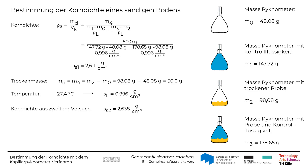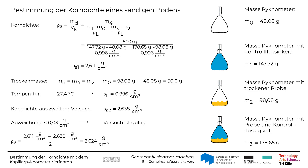In einem weiteren Versuch am gleichen Boden wird nach gleichem Vorgehen eine Korndichte Rho-S von 2,638 g pro Kubikzentimeter ermittelt. Da die Abweichung dieser beiden Korndichten kleiner als 0,03 g pro Kubikzentimeter ist, ist der Versuch gültig und muss nicht wiederholt werden. Für die Bodenprobe ergibt sich daher die Korndichte Rho-S aus dem Mittelwert der beiden Werte zu 2,624 g pro Kubikzentimeter.